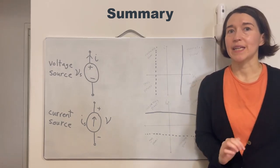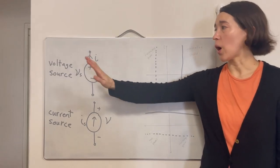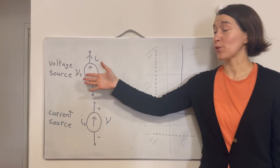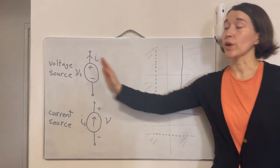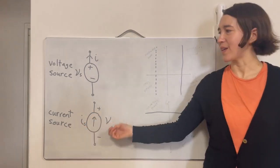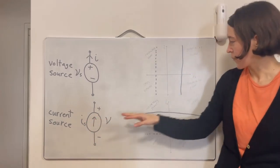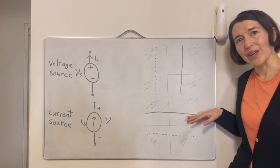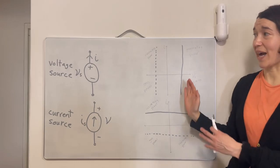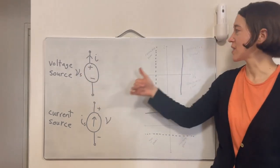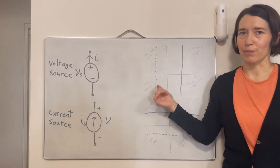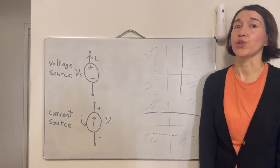For independent sources, we have the voltage source, which always maintains its given voltage and can supply current in any direction. Its IV curve can be positive, negative, or zero voltage. The dual problem is the current source, which maintains a set current — positive or negative — shown as a horizontal line on the IV curve. For all of these, positive voltage and positive current generates power, the two side quadrants consume power, and the bottom-left quadrant generates power.